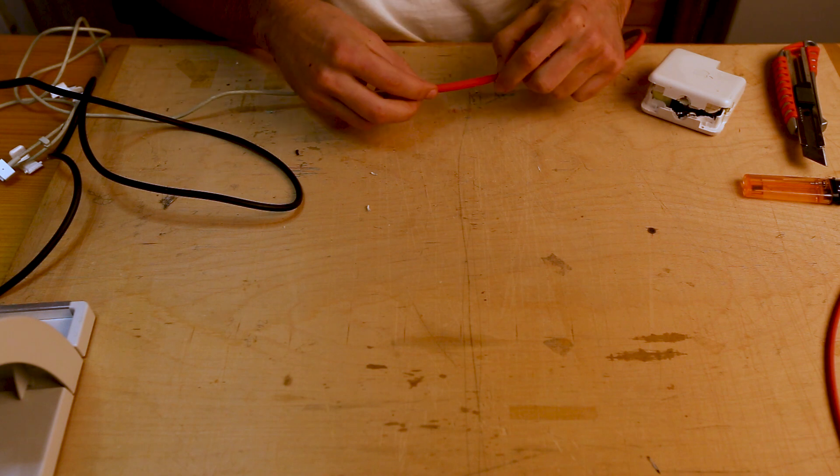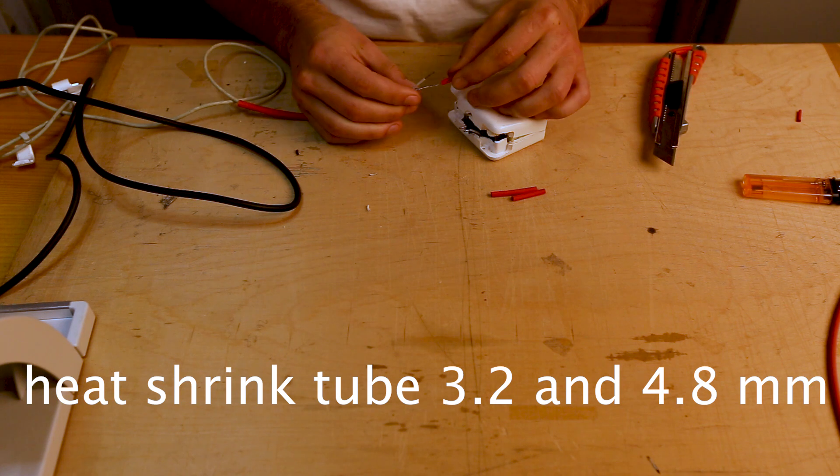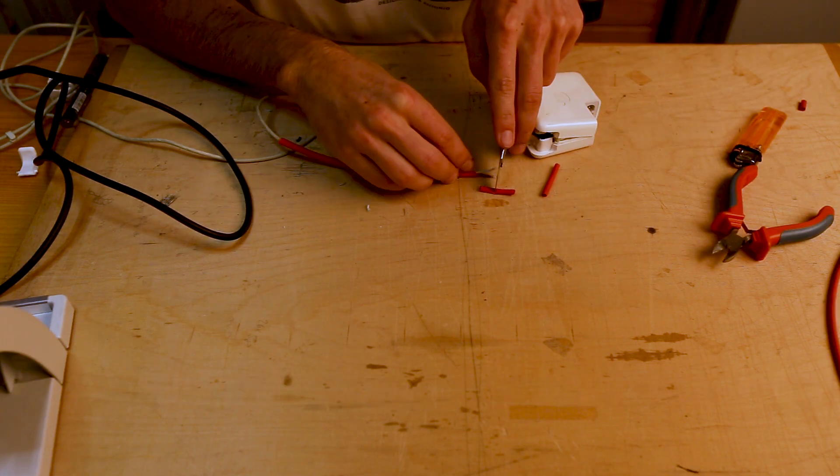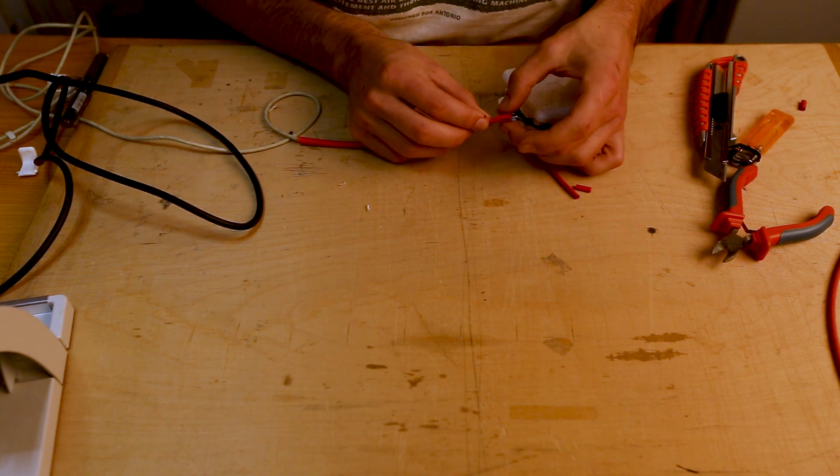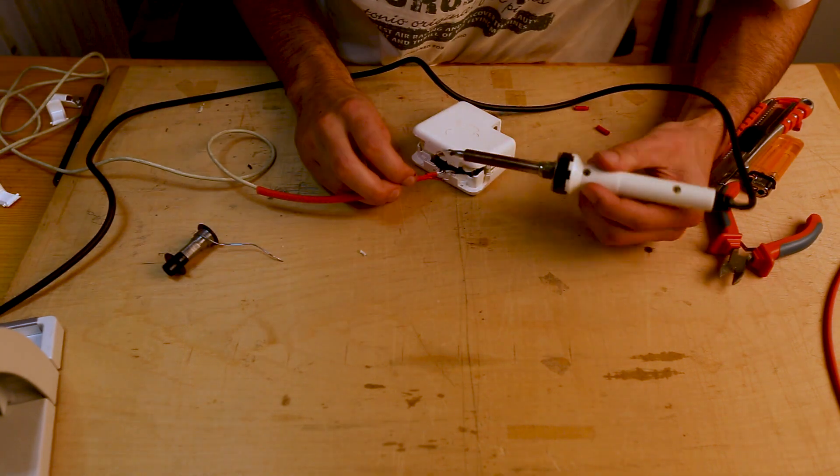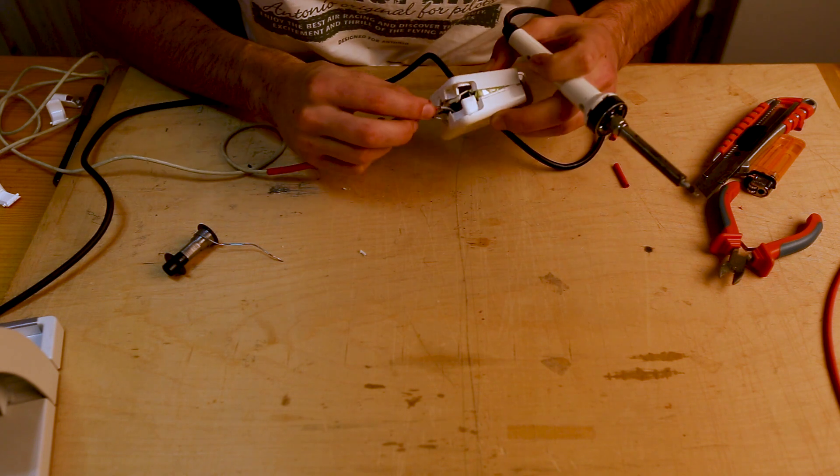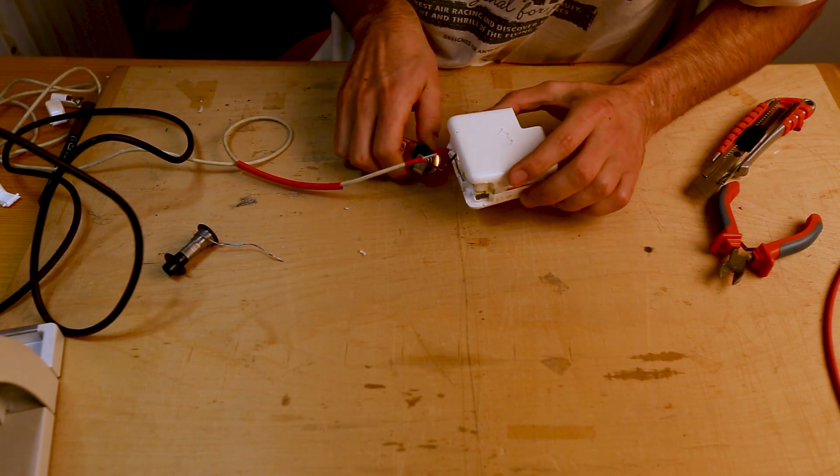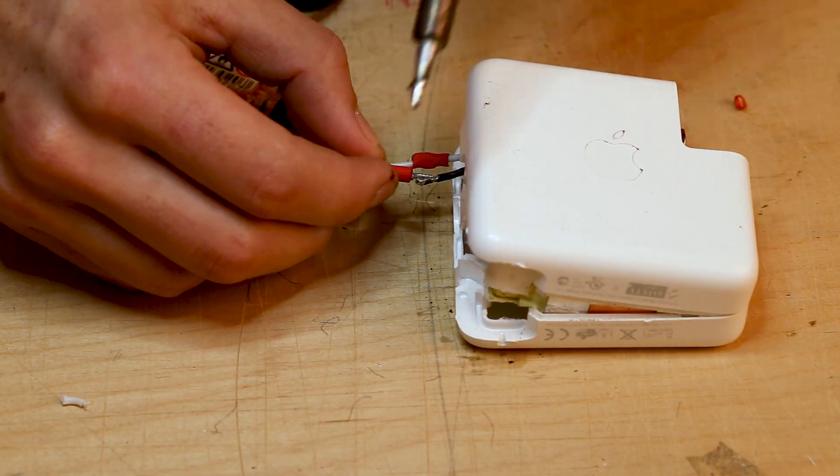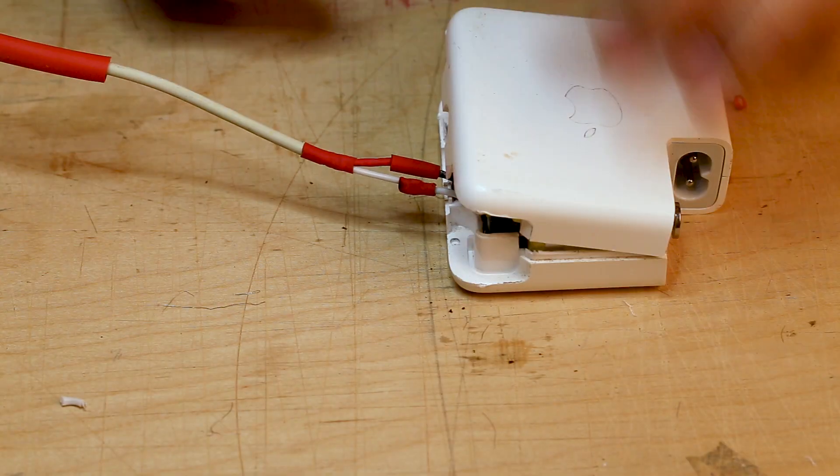We'll cut the pieces of heat shrink tube we need and put them on the cables. Now we are going to solder everything back together. The white wire which runs in the middle of the power cable gets soldered to the white wire in the charger, and the wires that run around the white wire in the cable get soldered to the black wire in the charger.